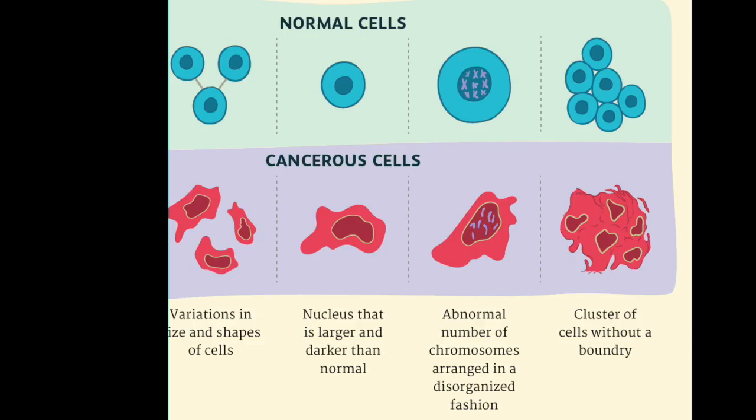When looking under a microscope, cancer cells would look almost like spiders or aliens, as you can see in the picture, while healthy cells would look like plump, round, and even circles.